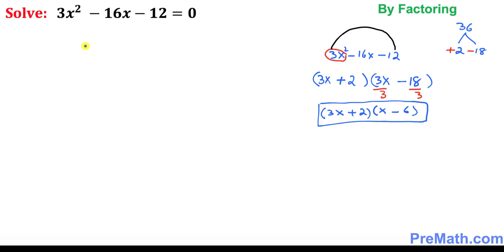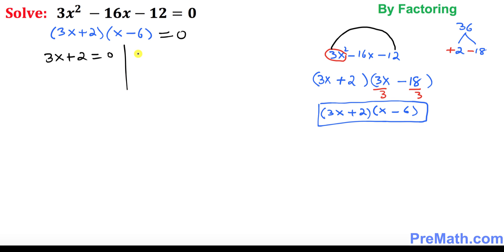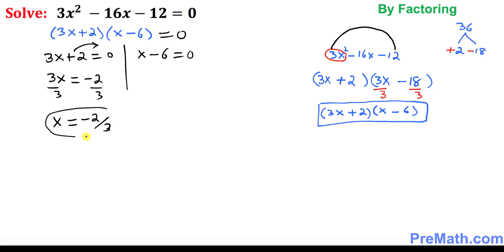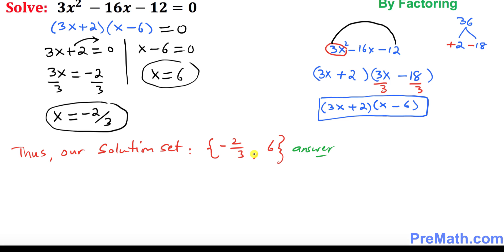So I'm going to put down (3x + 2)(x − 6), set equal to 0. Now we can split them up: 3x plus 2 equal to 0, and x minus 6 equal to 0. Moving the 2 to the other side gives negative 2, then divide both sides by 3, so x turns out to be negative 2 thirds — one of the solutions. And here we have x equal to 6 as another solution. So our solution set is negative 2 thirds and 6.